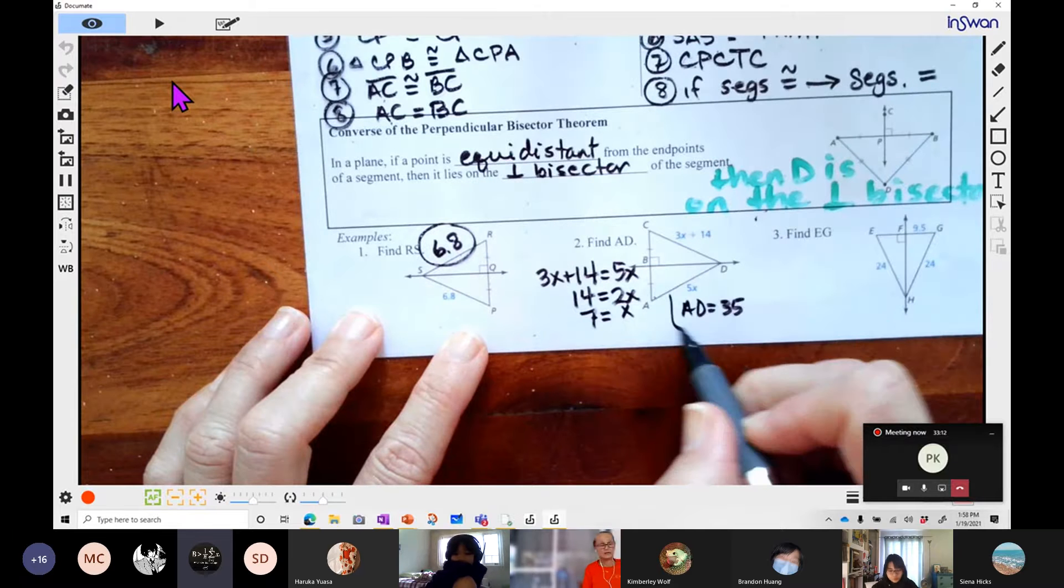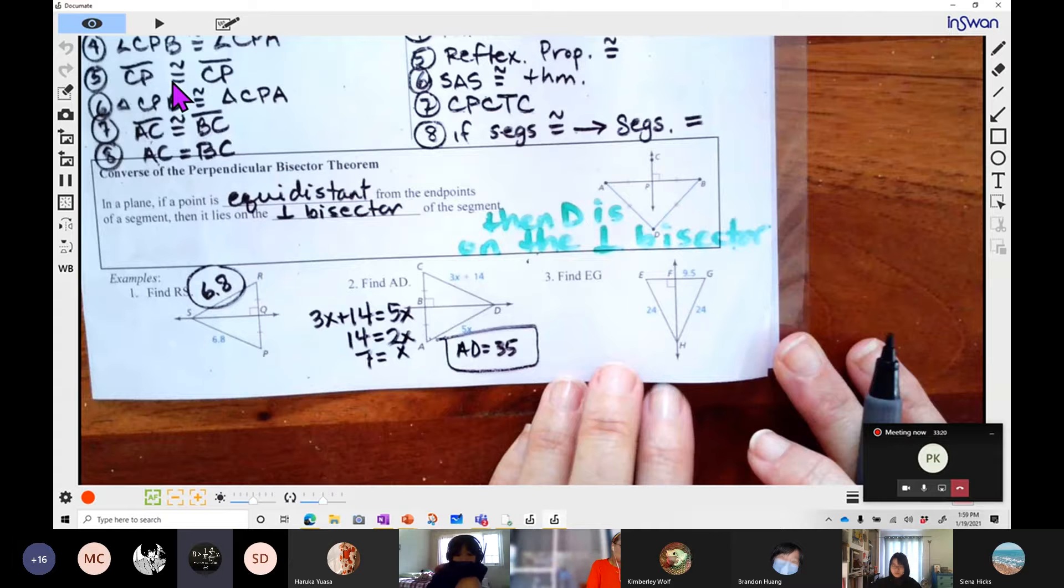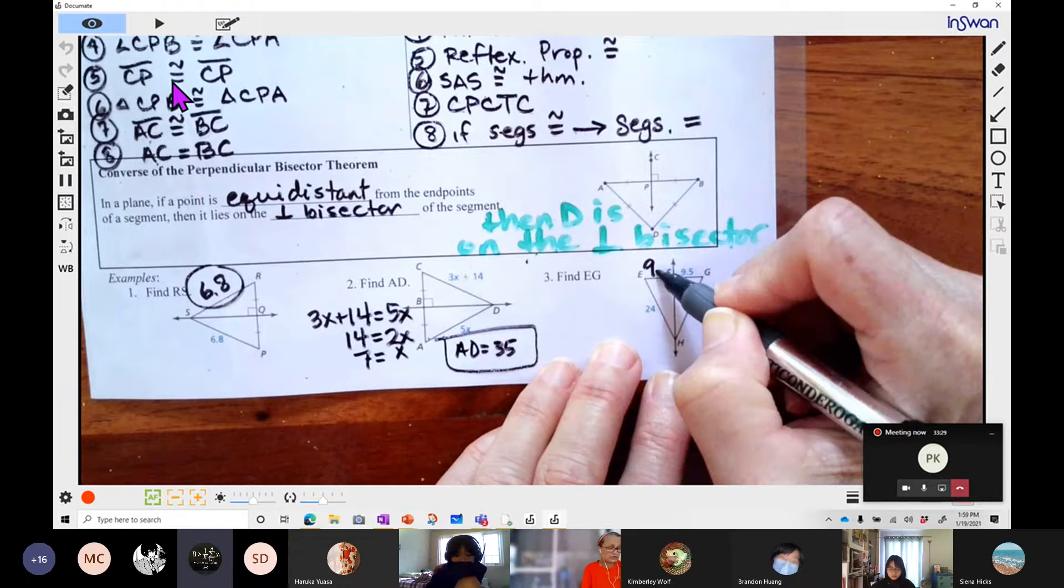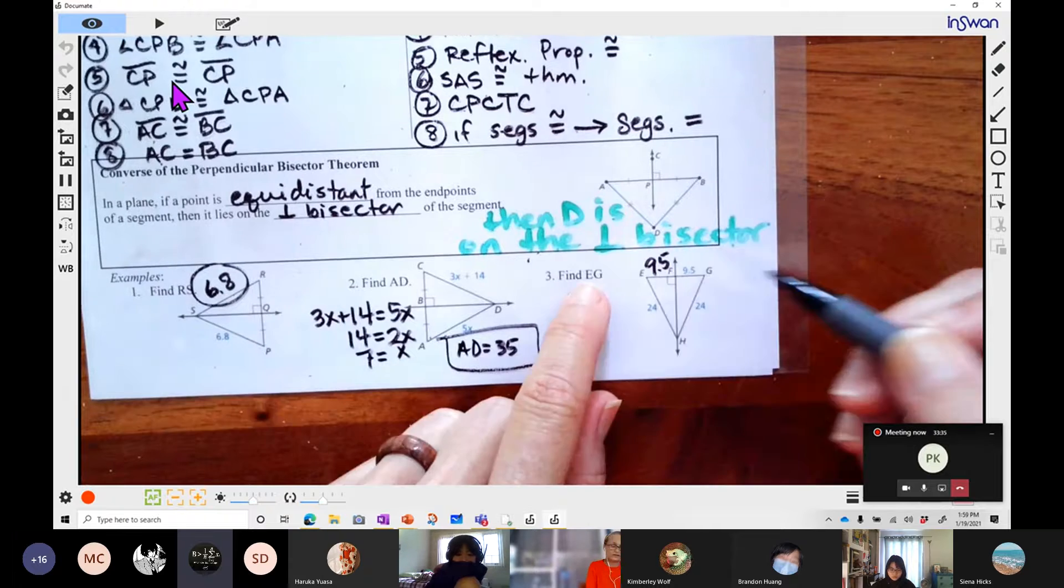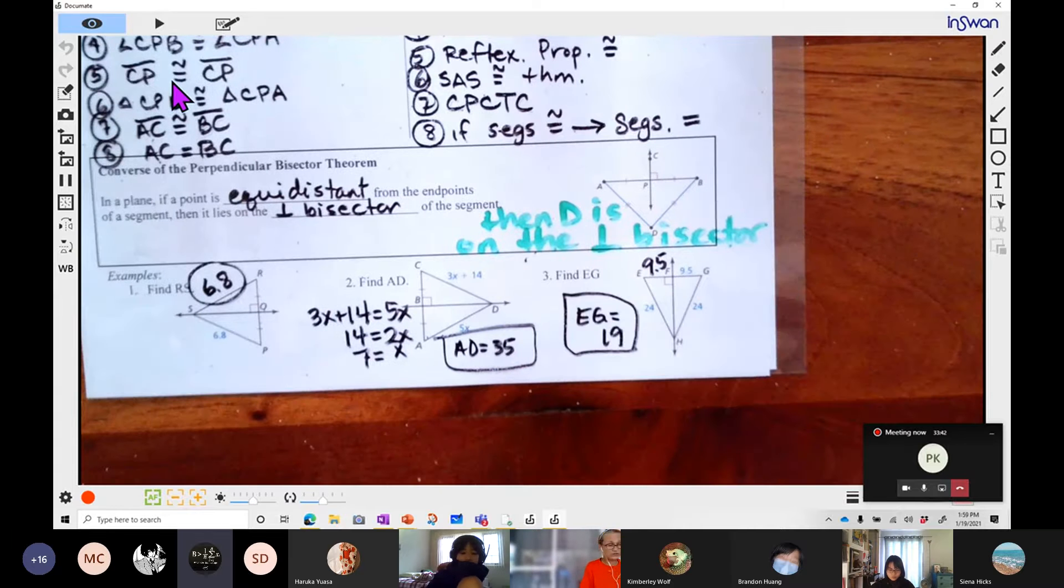Remember, always answer the question being asked. And then last, find EG. So we have another picture where these two sides are the same. It's perpendicularly bisected. That means that if this is 9.5, then this is 9.5. But again, the question says find EG. So from E to G, it's 9.5 times 2. So EG is going to be 19. Again, I'm checking for questions. If you have one, put your hand up in the participants list. Okay, I don't see anything. I'm going to turn the page over.